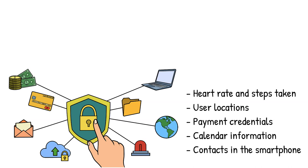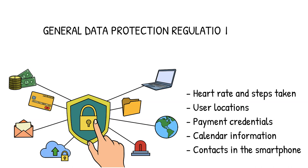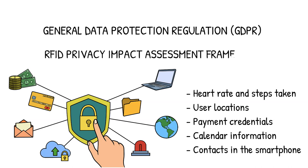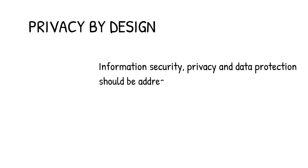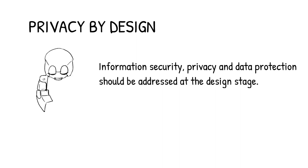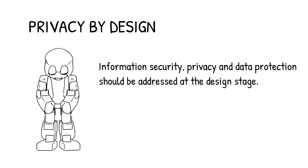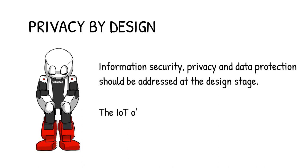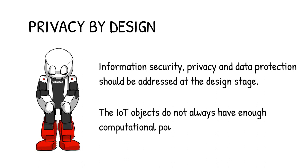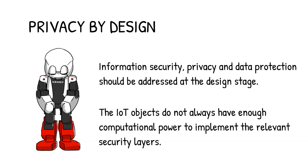Privacy and digital identity are protected by the European General Data Protection Regulation. Moreover, the RFID privacy impact assessment framework provides a prototype for a risk management-based approach which is applicable for IoT cases. Information security, privacy and data protection should be addressed at the design stage. Unfortunately in many cases they are added after the main functionality, and IoT objects do not always have enough computational power to implement all the relevant security layers and functionalities.